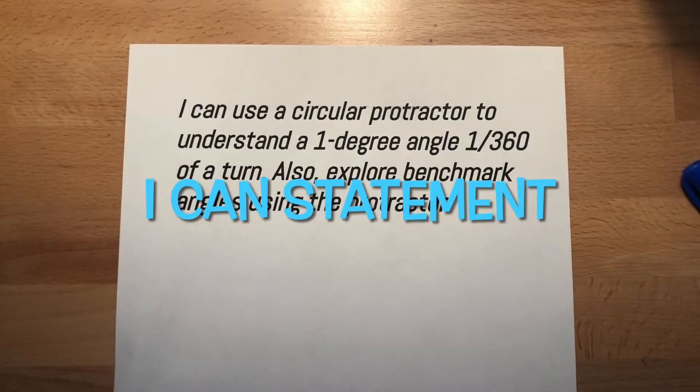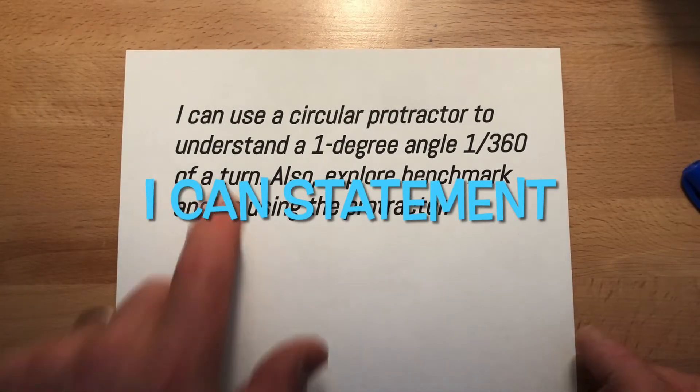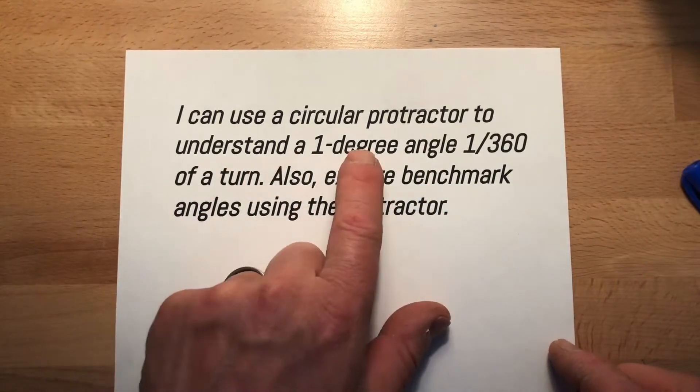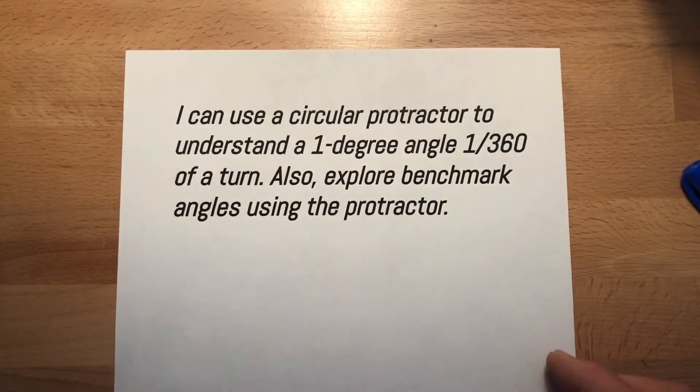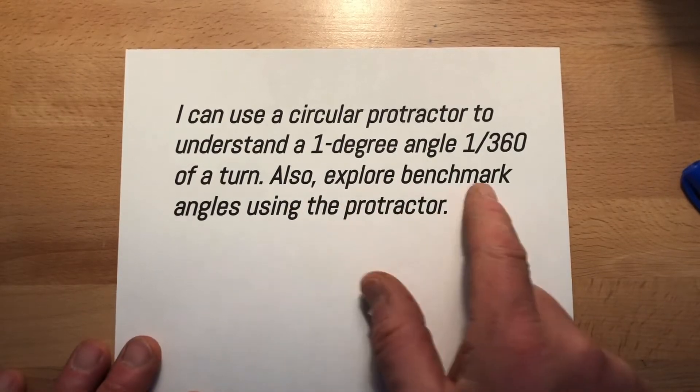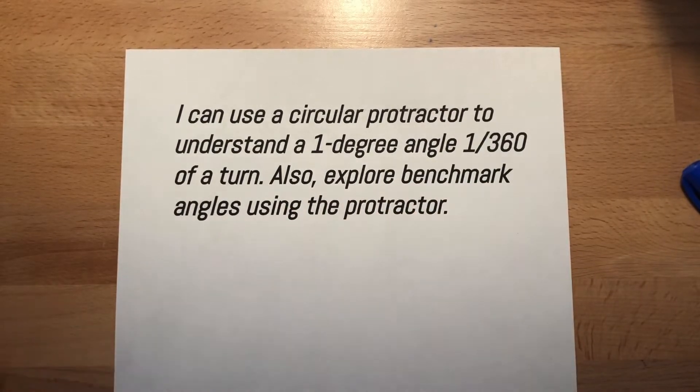All right, so here's our ICANN statement. It says, I can use a circular protractor to understand a one-degree angle, 1/360th of a turn. Also, explore benchmark angles using the protractor.